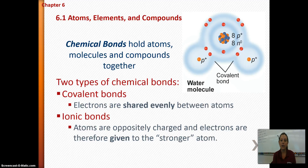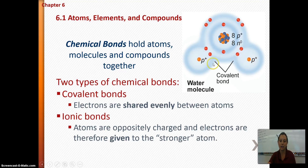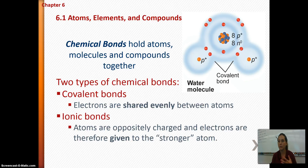Chemical bonds are bonds that hold atoms, molecules, and compounds together. There are two types: covalent bonds and ionic bonds. In covalent bonds, the electrons are shared between atoms — you can see the two atoms here sharing their electrons. In ionic bonds, the electrons are given to the stronger atom; the weaker atom basically donates an electron.